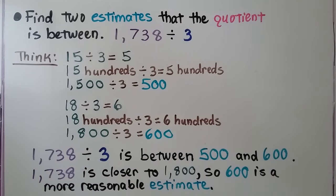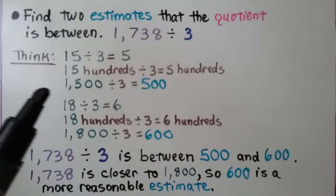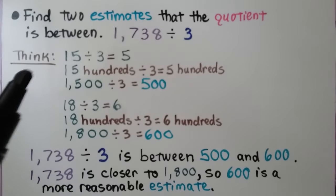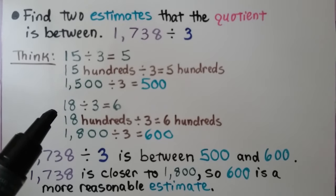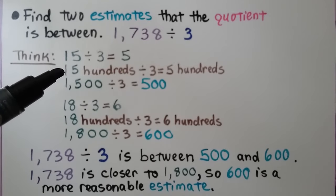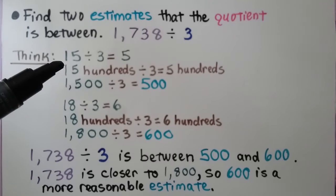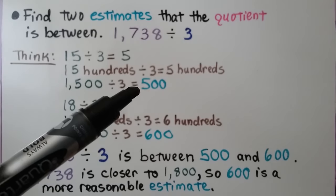We need to find two estimates that the quotient is between. We have 1,738 divided by 3. We think: 15 divided by 3 equals 5, and 18 divided by 3 equals 6. We can think 1,500 divided by 3 equals 500, giving an estimate of 500.